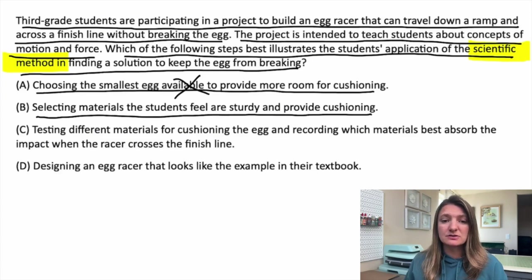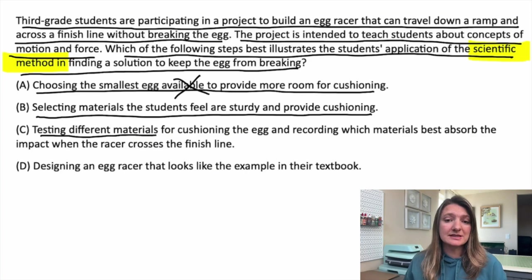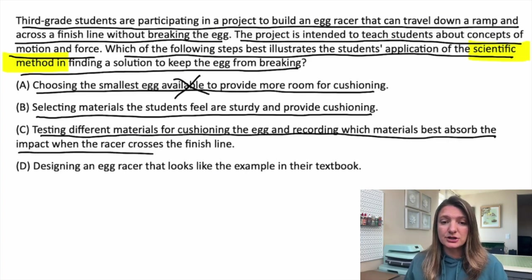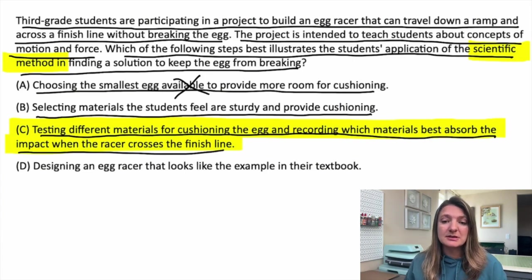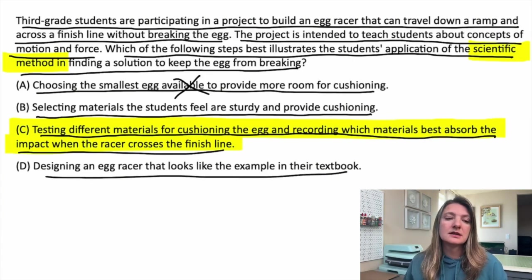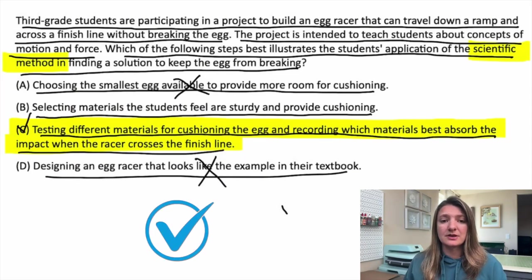Option B: selecting materials that a student feels are sturdy and provide cushioning — while those are great, we're not really using the scientific method either. Option C: testing different materials for cushioning the egg and recording which material best absorbs the impact when the racer crosses the finish line — this is the scientific method: choosing the material and then recording. Option D: designing an egg racer that looks like the example from the textbook — not really the scientific method. So our answer is C.